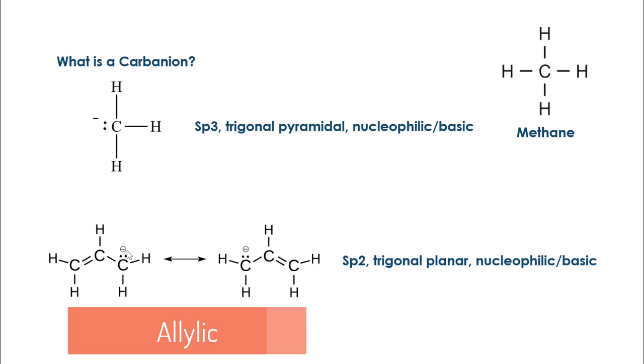When a lone pair is allylic, it can participate in resonance. We can move the lone pair to form a double bond and then move the double bond to form a lone pair, as you can see over here on the right. Because that lone pair can move via resonance, it's said to be delocalized.